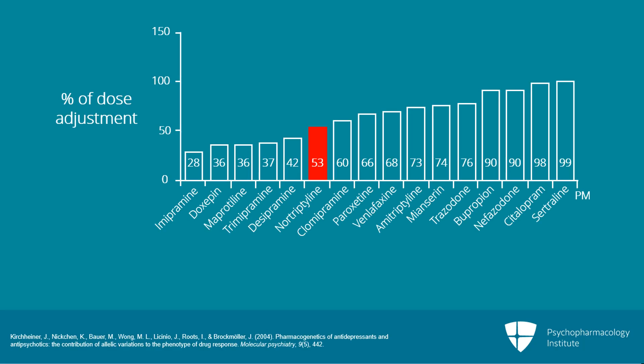Another study by Kirchheiner in 2004 performed a literature review and produced a graph showing that if you are a poor metabolizer taking nortriptyline, you should take a lower dose. Specifically, she recommends about a 50% reduction in dose for a poor metabolizer taking nortriptyline, based on a review of many different studies.